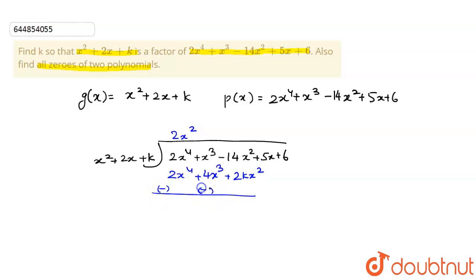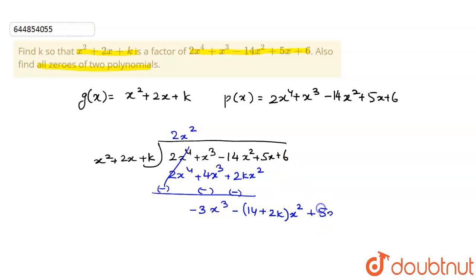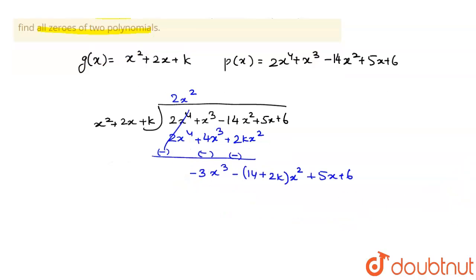Subtracting, the 2x⁴ terms cancel, leaving -3x³. Bringing down the remaining terms: (-14 + 2k)x² + 5x + 6. Now multiply the divisor by -3x to get -3x³ - 6x² - 3kx.